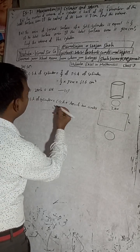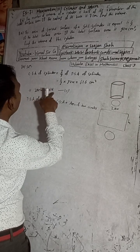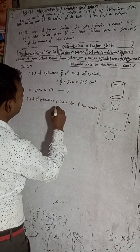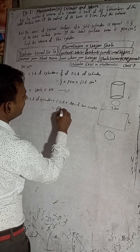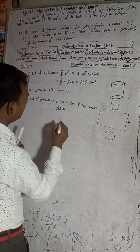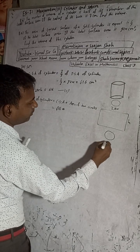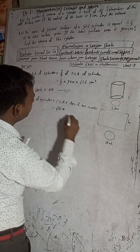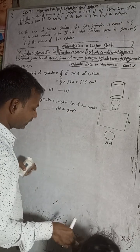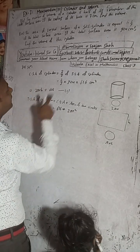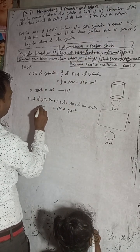The curved surface area is 616 cm². Adding the area of two circles — 2πr² — gives the total surface area of 924 cm². So: 616 + 2πr² = 924.